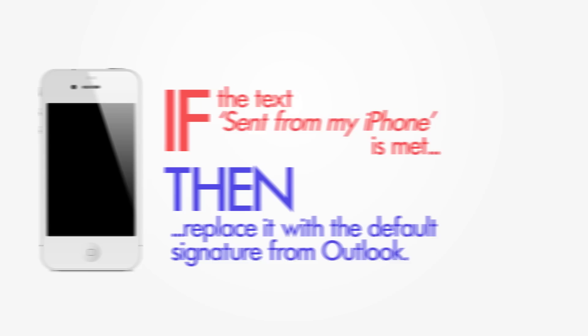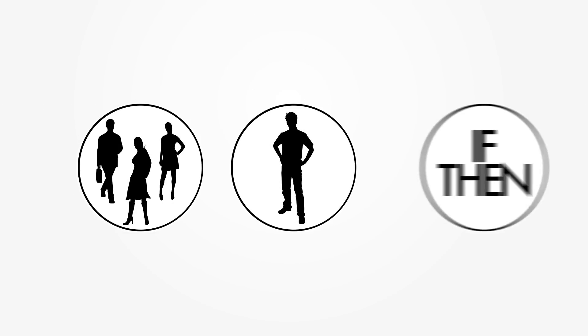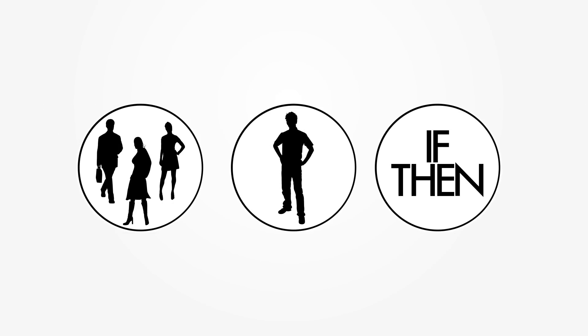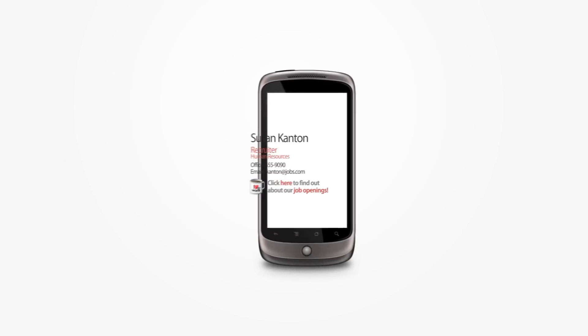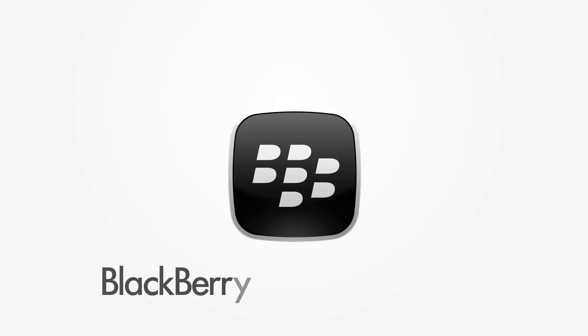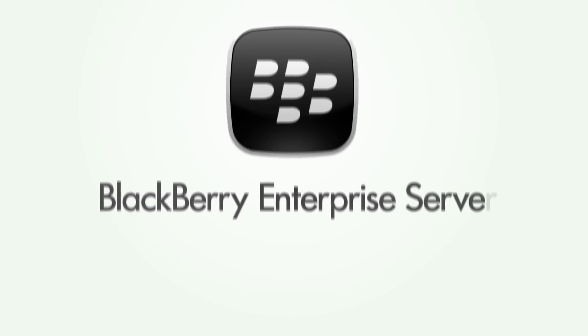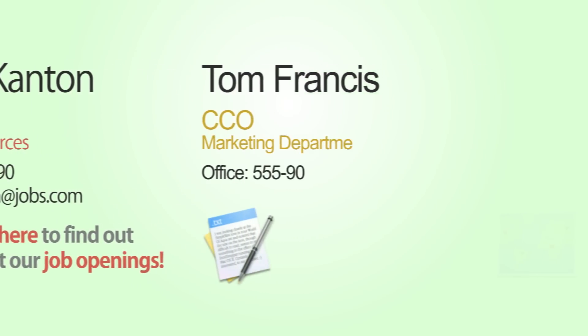And remember, this solution supports different signatures for groups, individuals, and rule-based deployment. This gives you the maximum flexibility possible and provides a content-rich signature for your mobile devices. For those with Blackberry-only environments, our Blackberry solution integrates with your Blackberry Enterprise Server. This unique solution allows you to see the signature and marketing messages before the email is sent.